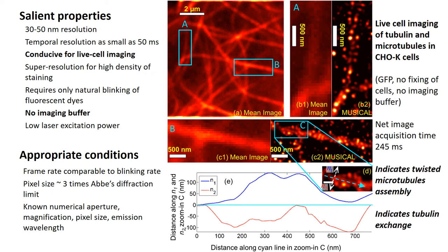An example is shown here. GFP stained tubulin plasmids were incubated in Chinese hamster ovary cells for about 72 hours. The cell shown here was imaged in its biologically conducive buffer without adding any imaging buffer. MUSICAL was performed using only 49 frames, thus amounting to a net acquisition time of 245 milliseconds. The MUSICAL results clearly show resolution of less than 50 nanometers and indicate the presence of very interesting twisted microtubule assembly as well as tubulin molecular exchange happening in the cell.